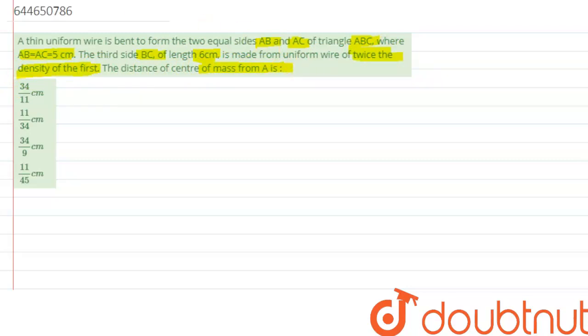So we have been given with a triangular shaped wire. So let's try to visualize it over here. So this is what we have been given with. And we are asked to find the center of mass from A.